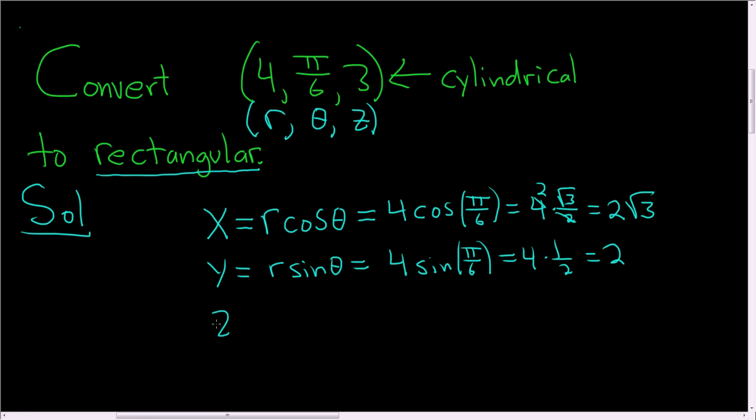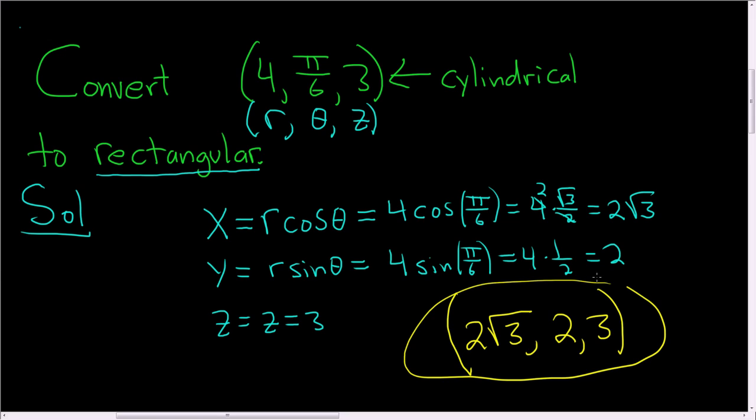z is actually just z, so in this case z equals 3. The final answer is (x, y, z) = (2√3, 2, 3). And that's it.